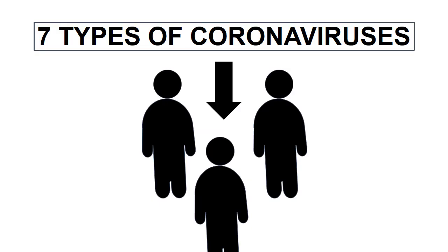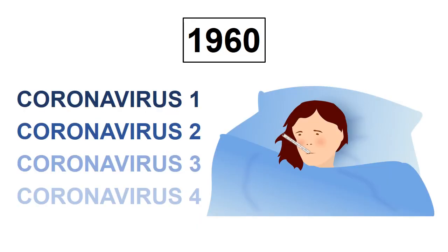There are seven types of coronaviruses that can infect people. The first four were discovered in the 1960s and produce mild symptoms like the common cold.